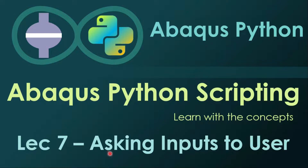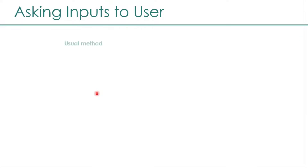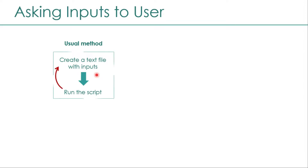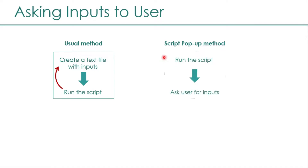Usually what we do is we write all our inputs in a text file and provide that text file to the script. When the script runs, it reads the input from that text file. There is some back-referencing there, highlighted with a red arrow. In this new method, we will run the script and ask for inputs from the user as and when we require them.